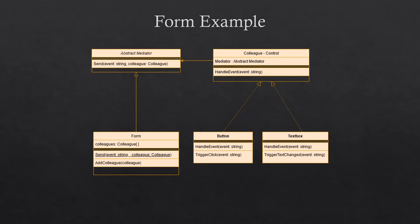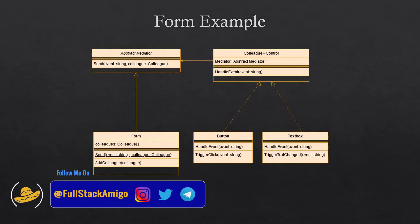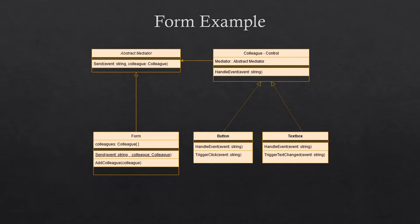The example is a form. A form is what we have in all of our applications — a login form and a register form are available in most applications. We should use the Mediator design pattern here because without it we'd have to copy everything from the register form to the login form, including changing event handlers for text change of the username. With the Mediator design pattern we can avoid all of this.